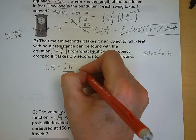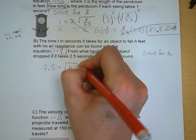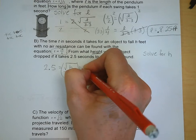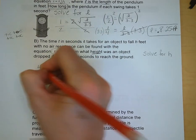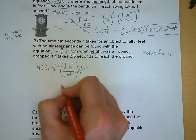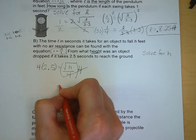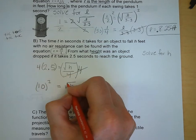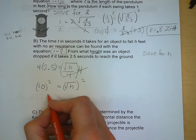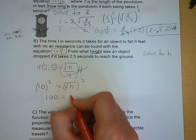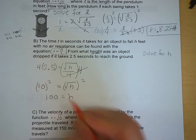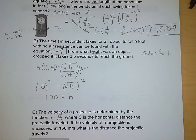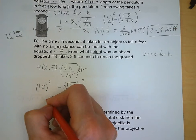We need to get rid of that 4 so we multiply both sides of the equation by 4. And we get 10 is equal to the square root of H and we want to square both sides of the equation to get rid of the radical. So 100 is equal to H and our unit is feet so make sure you have the unit on there. 100 feet.